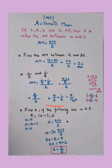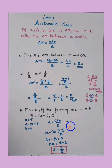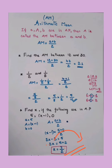Next, find x if the following are in AP: 5, x−1, and 0. Here a = 5, the middle value (AM) = x−1, and b = 0. Substituting into the formula: x−1 = (5 + 0) / 2 = 5/2. Cross-multiplying: 2(x−1) = 5, so 2x − 2 = 5. Shifting −2 to the other side: 2x = 7, therefore x = 7/2.